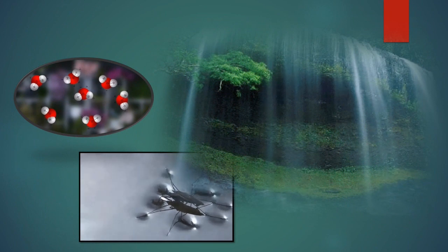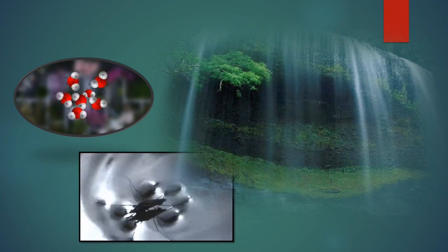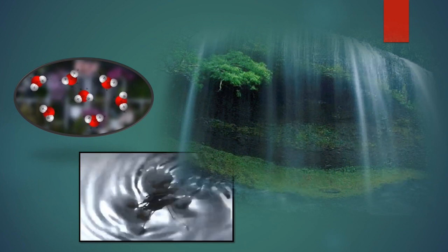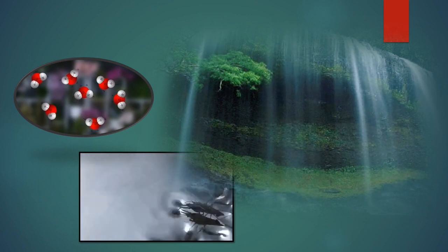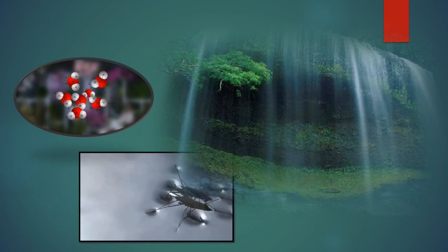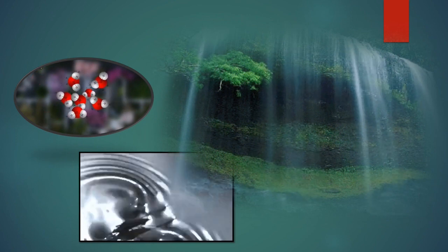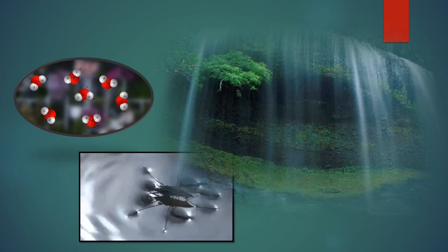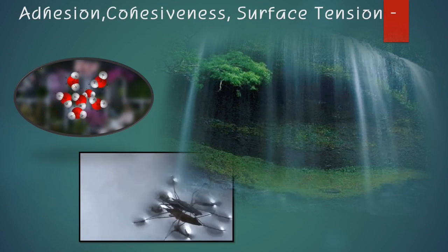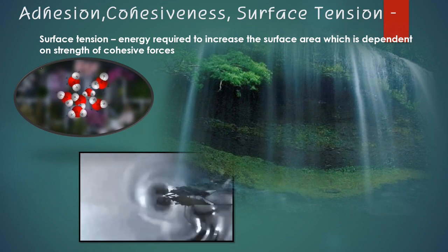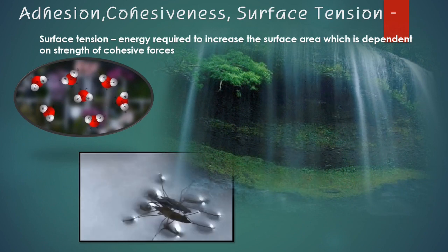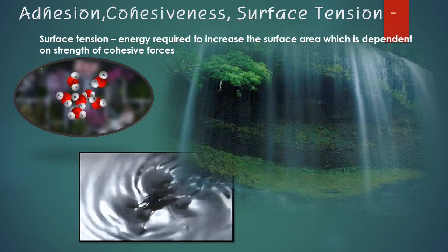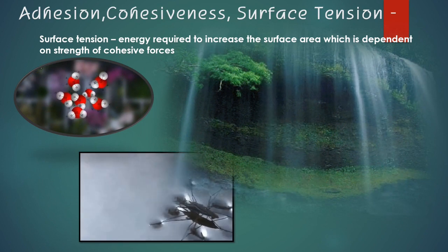Like adhesion and cohesion, the extensive hydrogen bonding and intermolecular forces that create interconnectedness of water molecules exert their power on what we call surface tension. Surface tension is defined as the energy required to increase the surface area, which is dependent on the strength of cohesive forces.